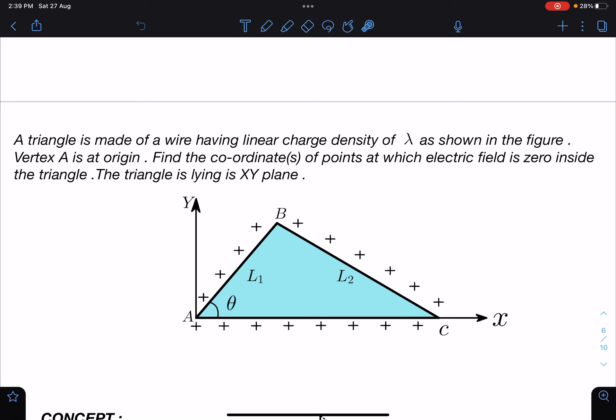Find the coordinates of points at which electric field is zero inside the triangle. The triangle is lying in XY plane. Two sides L1 and L2 are given here and this angle theta is given, so by using sine rule here L1 by sine beta and L2 by sine theta.